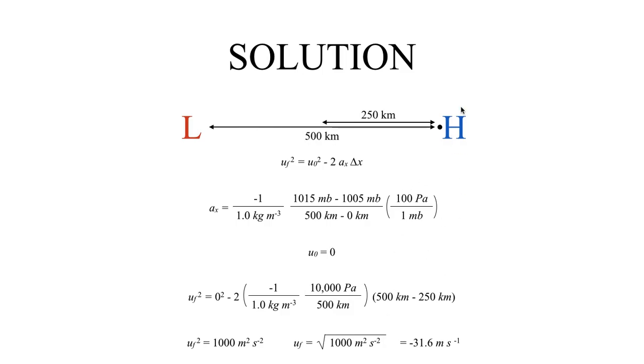We have to make sure that this right-hand side is positive, because we're going to take a square root of it. If you work all that math out, you will get that this u_f², this final velocity squared, is equal to 1000 meters squared per second squared. So to get the final velocity, we just simply take the square root of that. Our final velocity is the square root of 1000 m²/s².